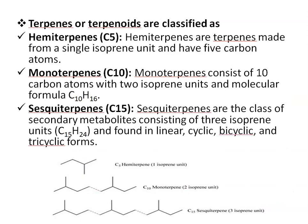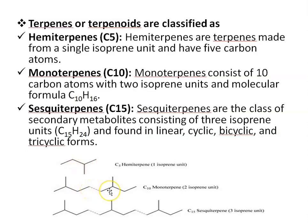Terpenes and terpenoids are classified into 7 different classes. First is hemiterpenes — hemiterpenes are terpenes made from a single isoprene unit and have 5 carbon atoms. Monoterpenes consist of 10 carbon atoms with 2 isoprene units, and their molecular formula is C10H16.